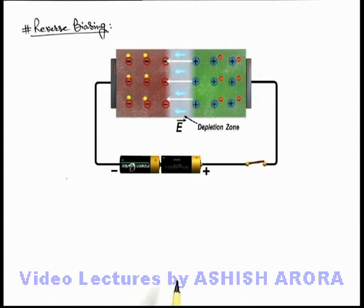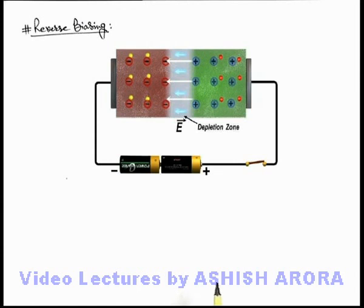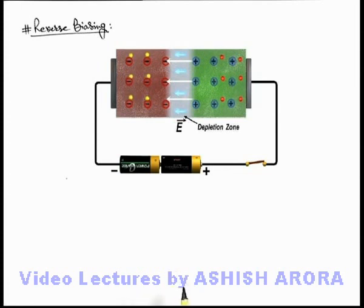Due to which, the depletion layer width is increased, and no flow of charge carriers takes place in this situation. So we can say the current in the circuit will be negligible. However, in the p side there are some minority carrier electrons, and on the n side there are some minority carrier holes. A very minute current flows through the junction due to minority carriers, but we are not representing it here because the current due to this is negligible.